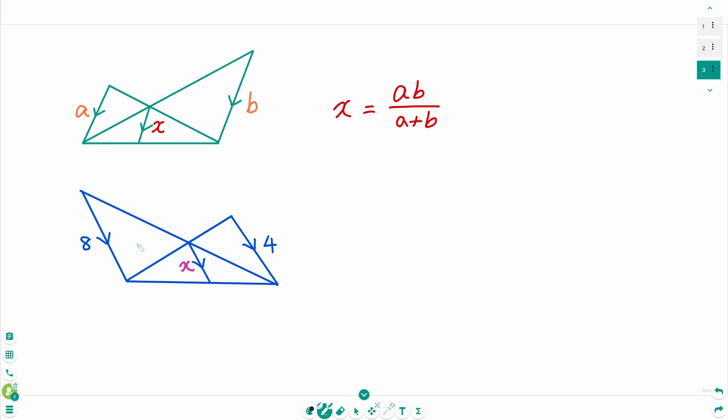This is the last one. x equals 8 times 4 over 8 plus 4 equals 32 over 12. Then divide by 4 on each side. 4 times 8, 4 times 3. The final answer is 8 over 3.